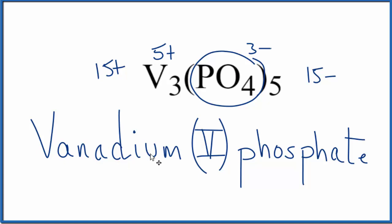If you're given the name vanadium five phosphate and you need to write the formula, there's a link at the end of this video to help you do that. This is Dr. B with the name for V3PO45. It's vanadium five phosphate. Thanks for watching.